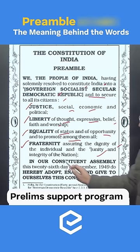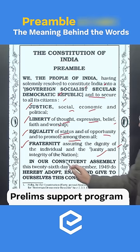The word 'integrity' was added later on — initially it was 'the unity of the nation.' In our constituent assembly, this 26th day of November 1949, do hereby adopt, enact and give to ourselves this constitution. So, this is the preamble.